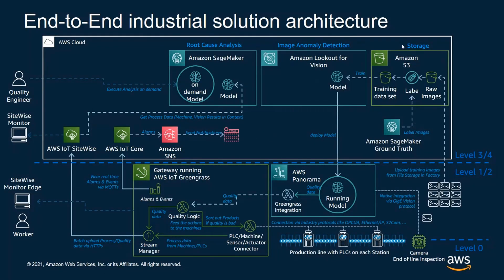Here is an end-to-end industrial solution architecture on AWS. I'm going to start at level zero, and I have built this architecture according to the ISA 95 model and the Purdue model as well. Typically, at level zero, that's where you have the piece of equipment, the sensors, and the PLCs. For this particular architecture, let's assume that these PLCs support OPC UA, Ethernet IP, or Modbus TCP out of the box.